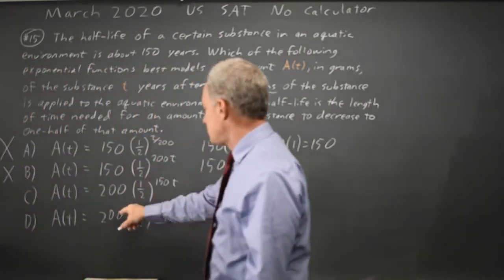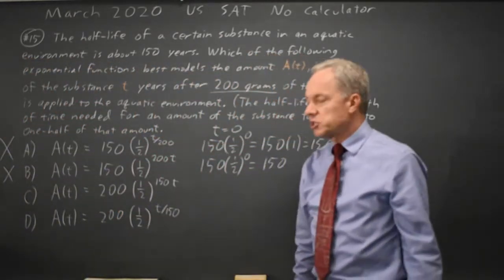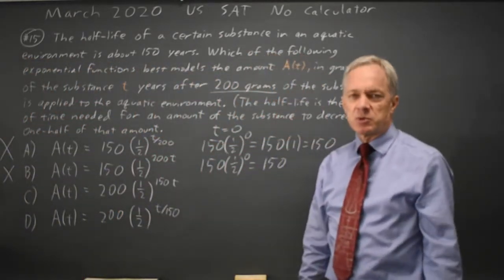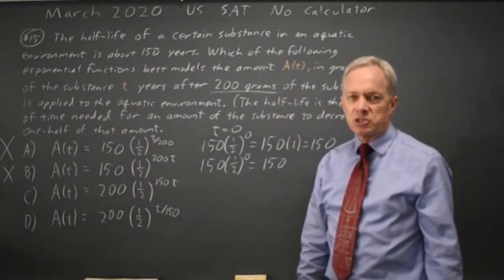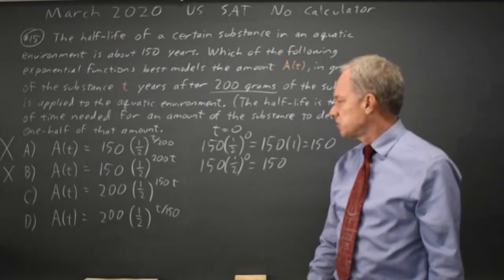Choices C and D are going to give us 200 times 1, which is 200, so they do match at t equals 0.